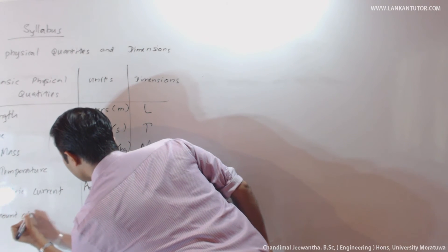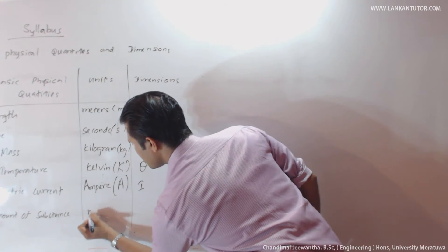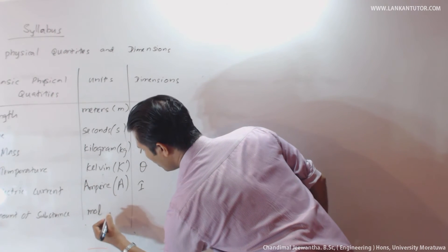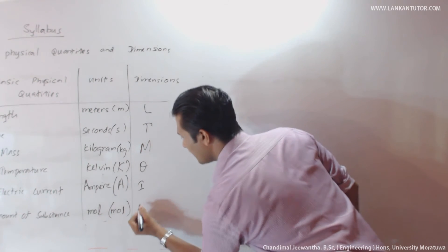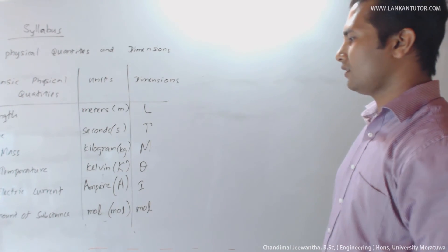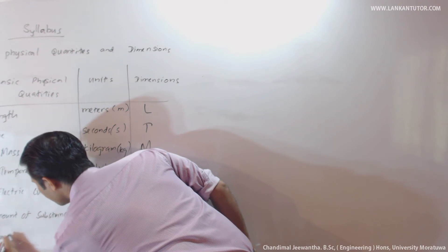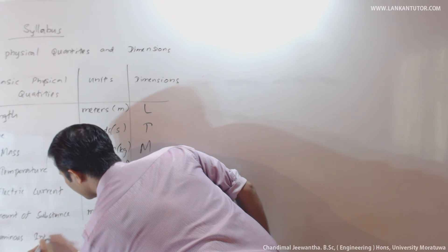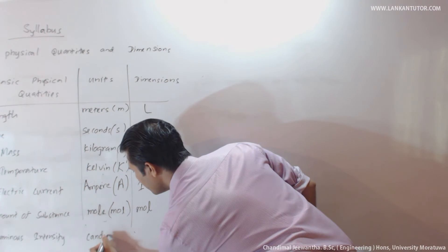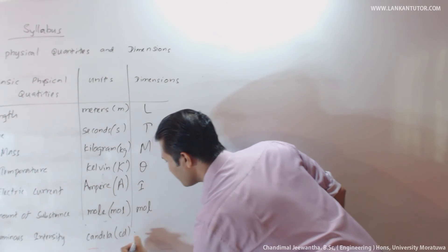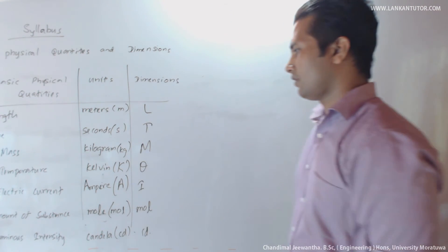The sixth is amount of substance. The unit of amount of substance is moles, the symbol is 'mol', and the dimension is also 'mol'. The seventh and final one is luminous intensity. The unit is candela, and the symbol is 'cd'.